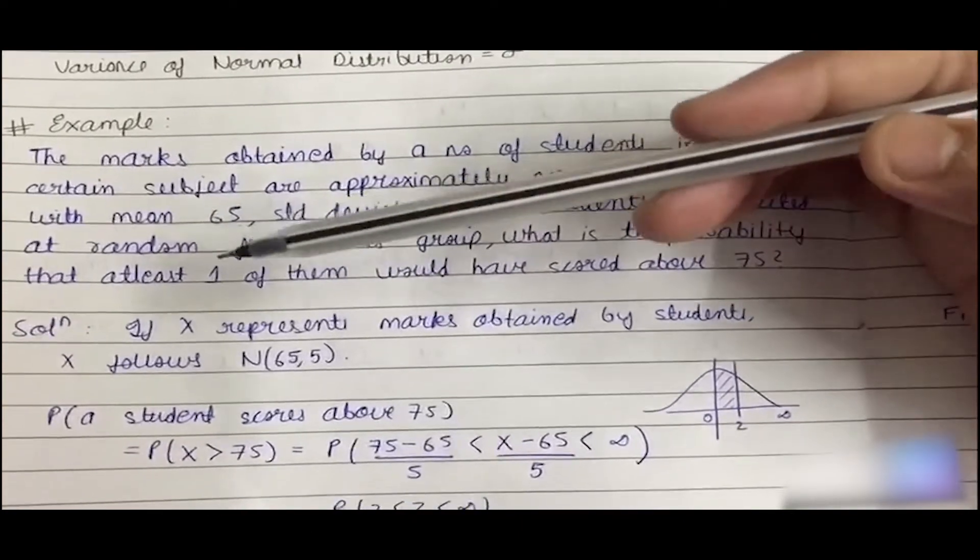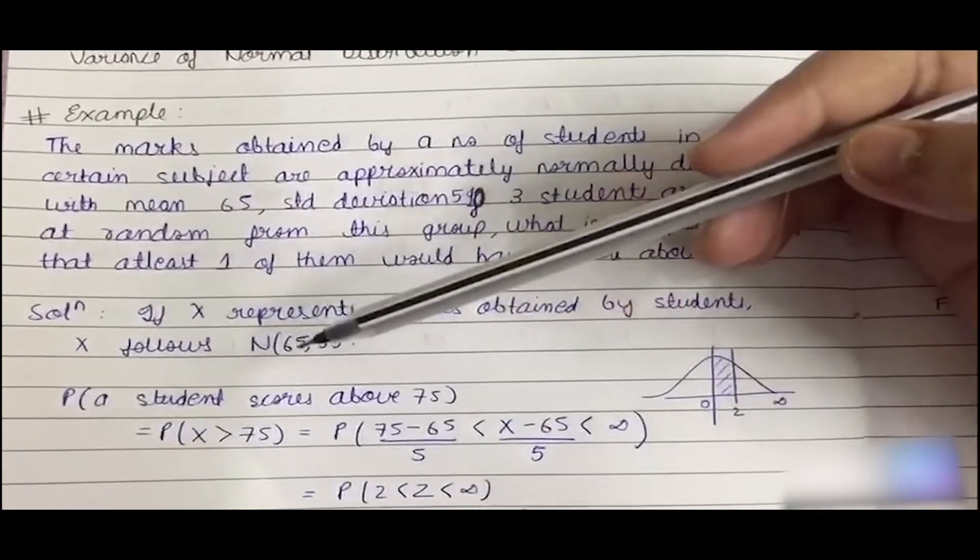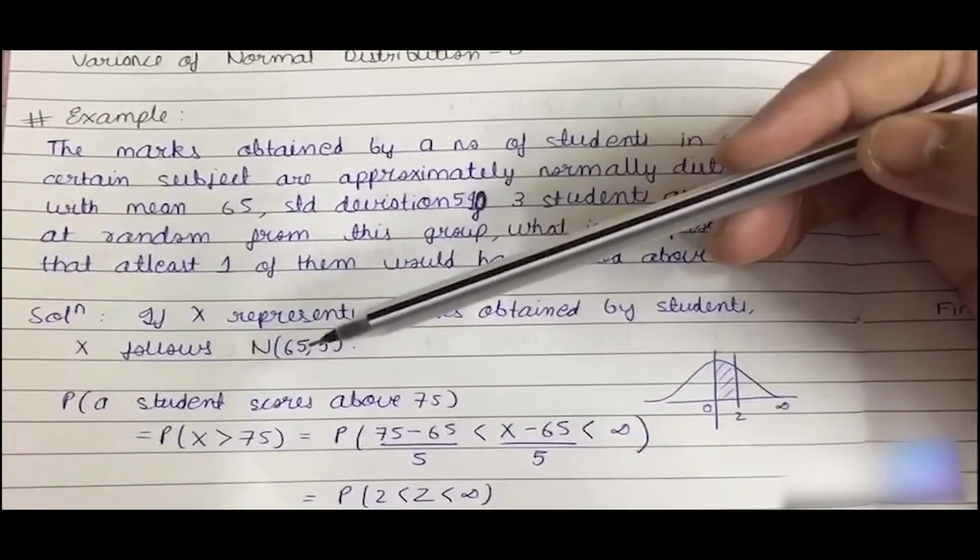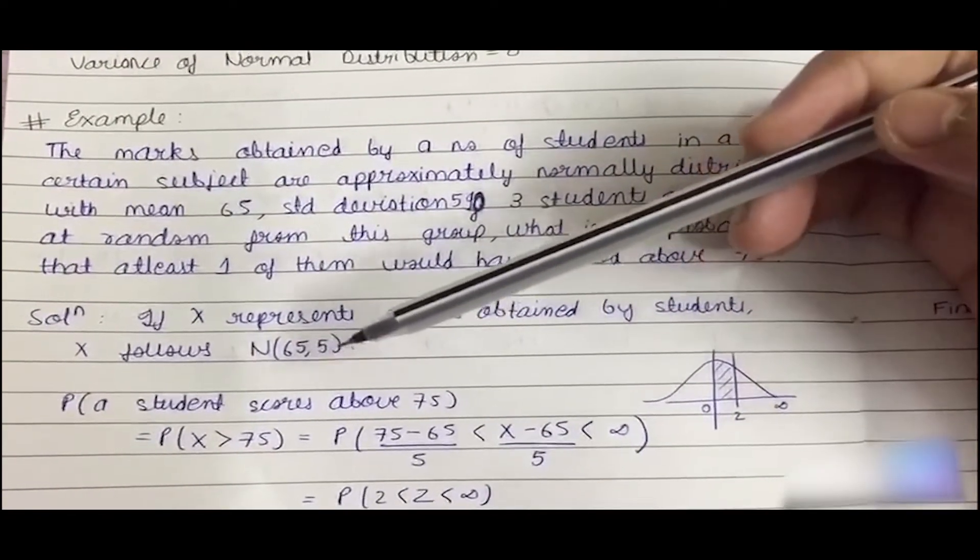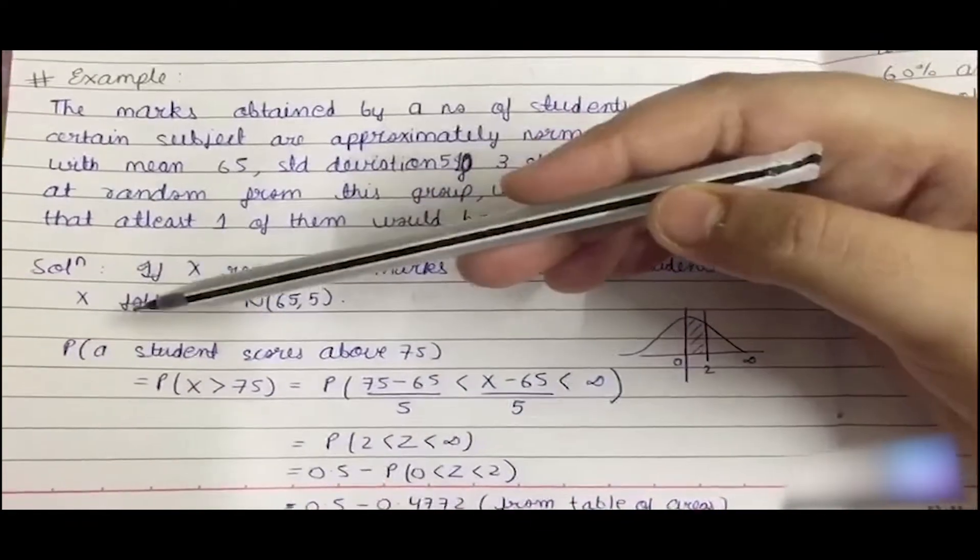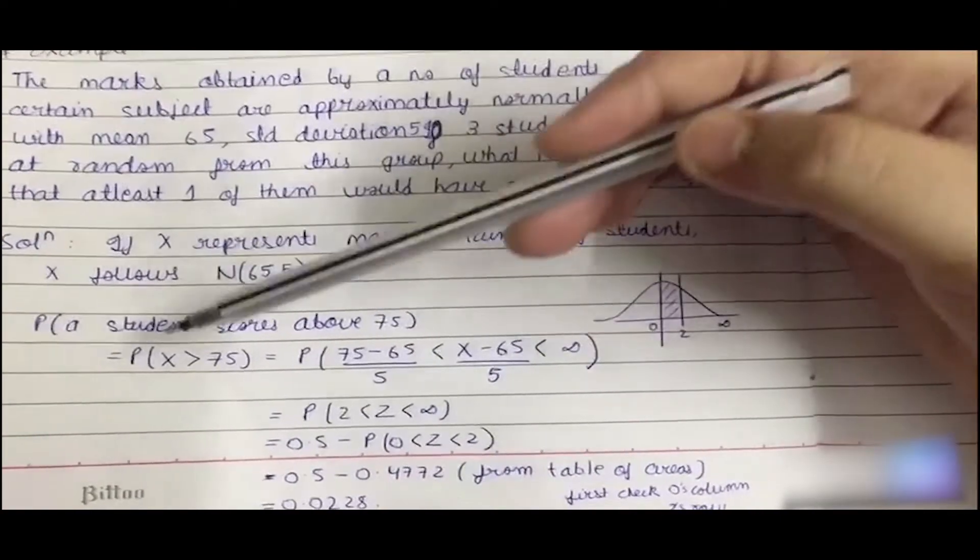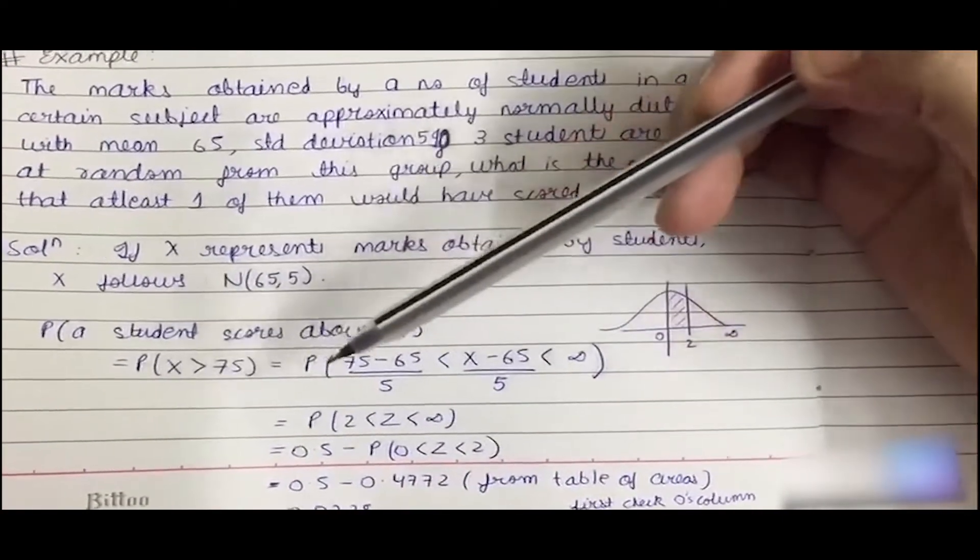Let us see the solution. If X represents the marks obtained by students, then X would follow a normal distribution with the parameters mu equals 65 and sigma equals 5. Now the probability of a student scoring above 75 would be P(X greater than 75).